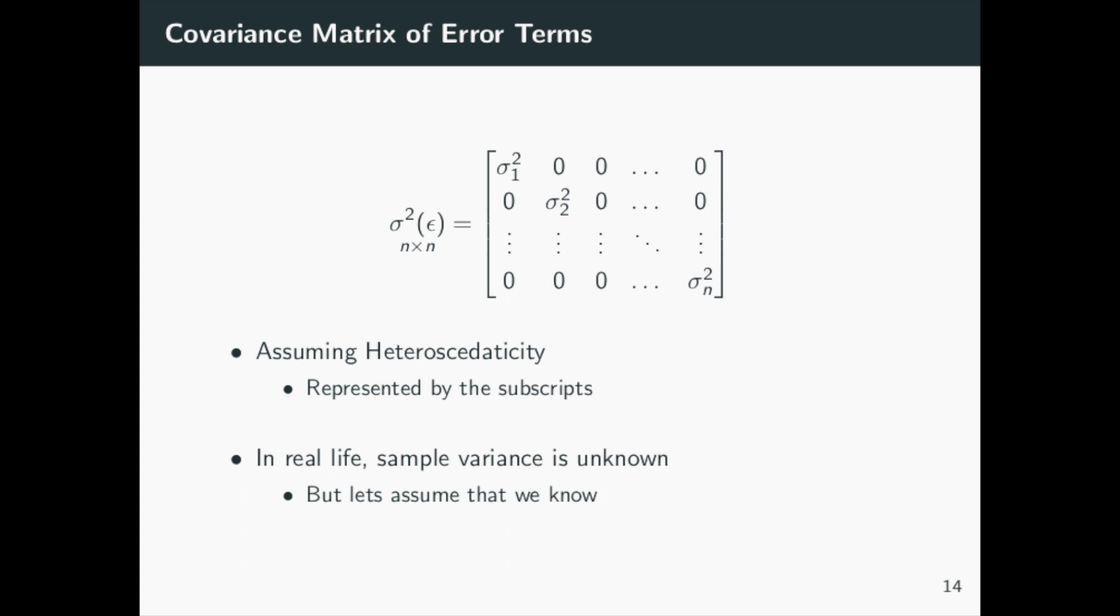Unlike the matrix using constant variance, each sigma squared has a different value. This is represented by the subscripts attached to each sigma squared.